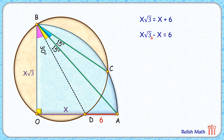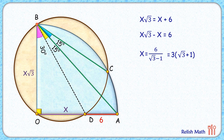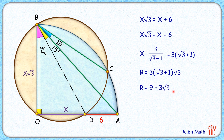Taking x terms to one side, x will be common, giving x times (root 3 minus 1) equals 6. So x equals 6 divided by (root 3 minus 1). Rationalizing the denominator, we get x equals 3 times (root 3 plus 1). Now the radius of the blue quadrant is BO, which equals x times root 3, so radius R equals 3(root 3 + 1) times root 3. Solving, R equals 9 plus 3 root 3, which simplifies to approximately 14.2 centimeters — and that's our answer.